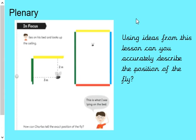Okay, welcome back. Hopefully, you got through the worksheet, no problem whatsoever. If we think back now on our plenary, we're going to go back to the in focus task. And we're saying here that using ideas from this lesson, could you accurately describe the position of the fly? Well, we're really saying in this lesson that the fly is two meters from the yellow wall and then three meters from the green wall. Nice and simple. Have a good day, and I'll see you tomorrow.